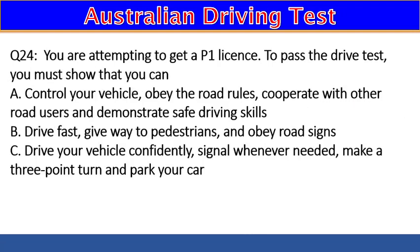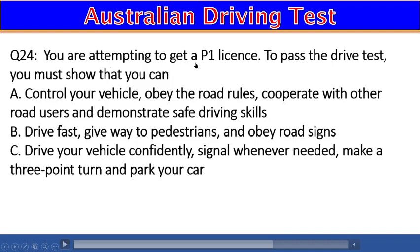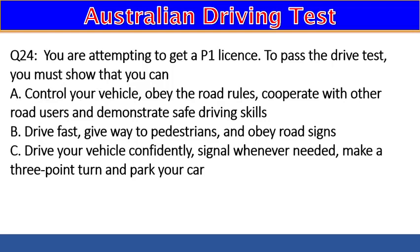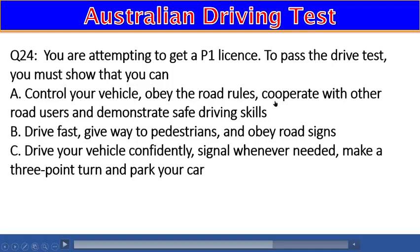Question 24: You are attempting to get a P1 license. To pass the driving test you must show that you can: A) Control your vehicle, obey the road rules, cooperate with other road users, and demonstrate safe driving skills, B) Drive fast, give way to pedestrians, and obey road signs, C) Drive confidently, signal whenever needed, make a three-point turn, and park your car. The right answer is A.